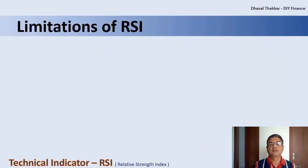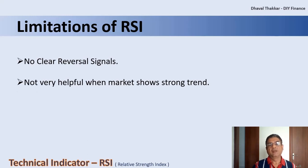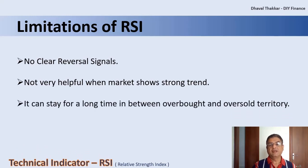Now let's see the limitations of RSI. There is no such thing as a foolproof strategy that can guarantee profits. Like every indicator, RSI also has certain limitations. First, clear reversal signals are rare and can be difficult to separate from false alarms. Second, the RSI indicator is not as helpful when the market shows a very strong trend. Third, since the indicator displays momentum, it can stay in the overbought or oversold category for a long time when an asset has significant momentum — therefore RSI is most useful in an oscillating, range-bound market.